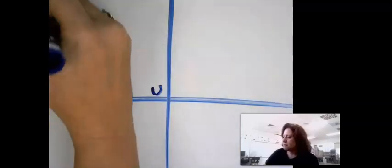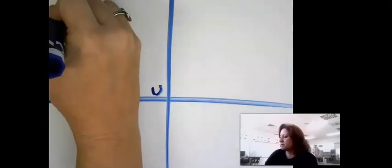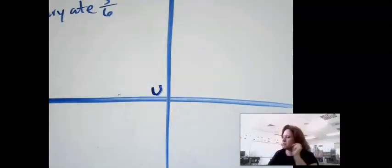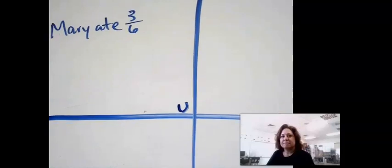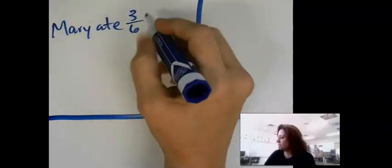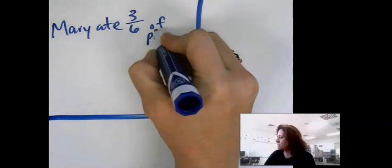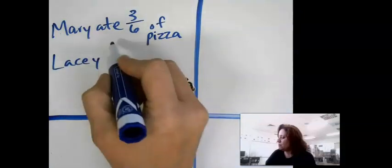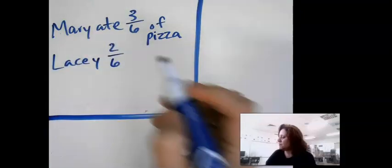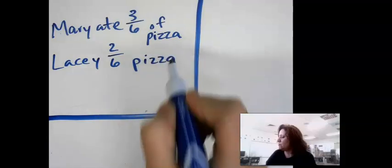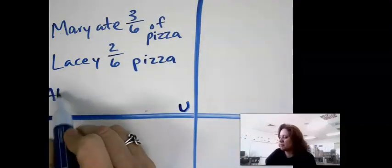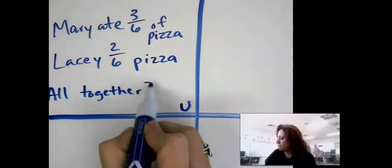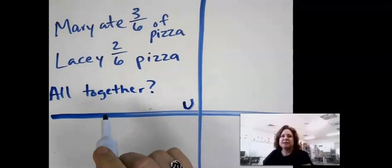I understand that Mary ate three-sixths of the pizza. And Lacey ate two-sixths of the pizza. And we need to know how much they ate all together. How much did both of them eat together?